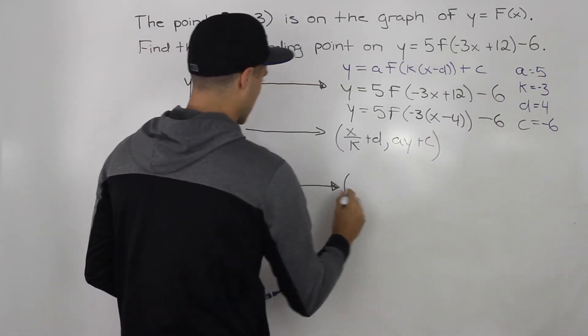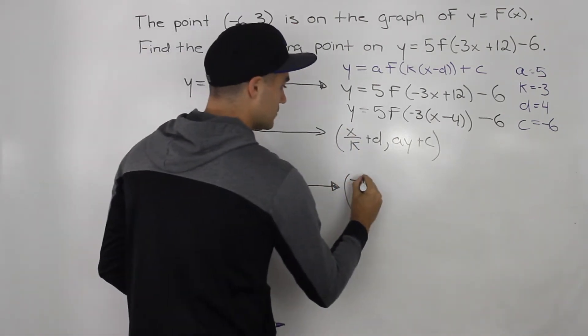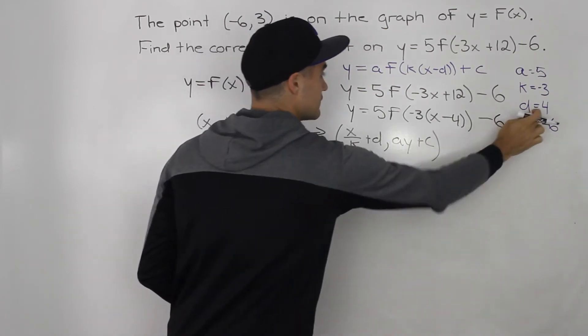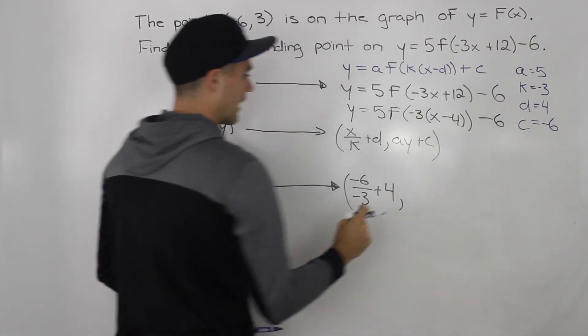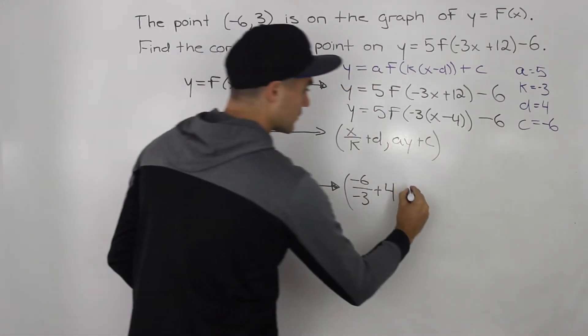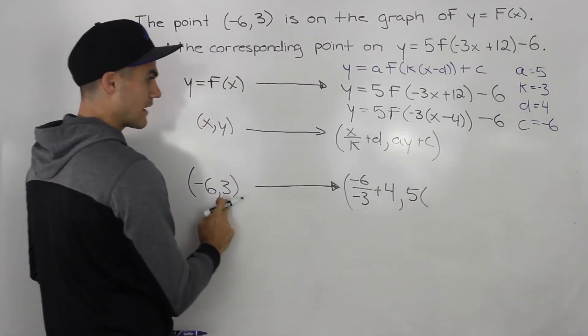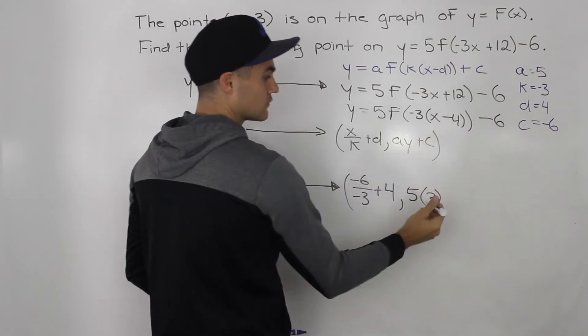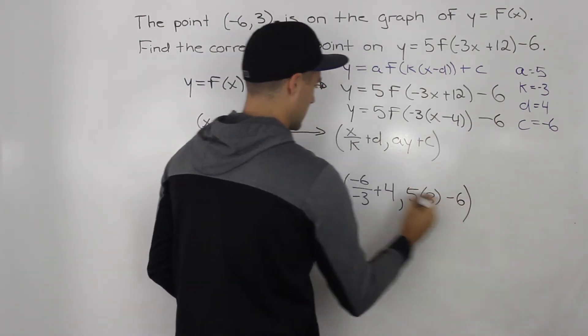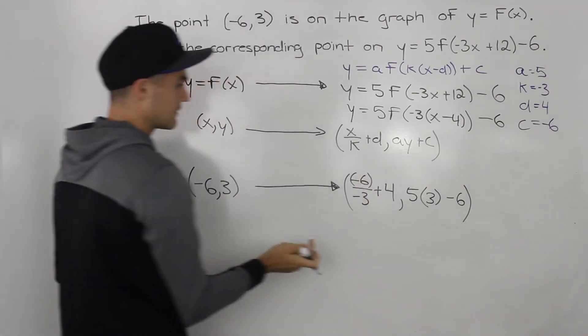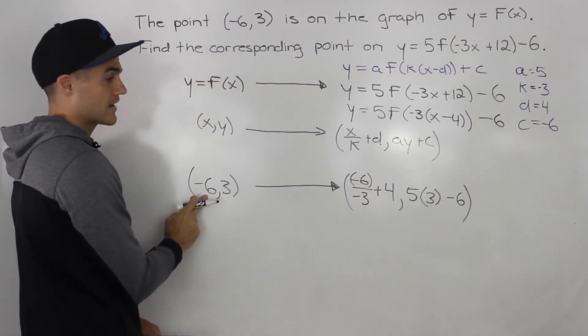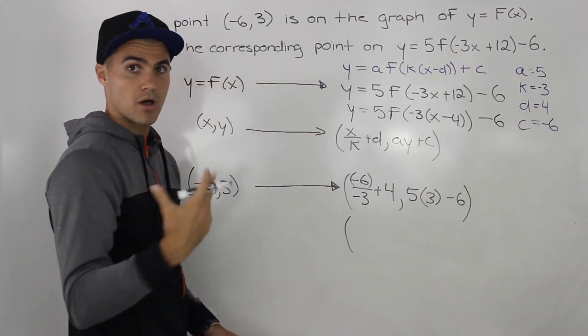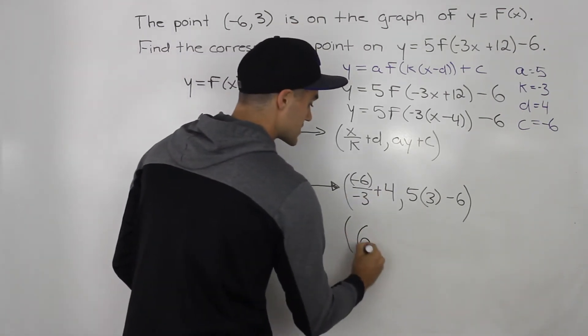So if we apply this formula on this point with these transformation values, what we're going to get is we're going to have -6, which is the x value divided by the k value of -3 plus the d value of 4. And then for the y coordinate, we're going to have the a value 5 times the y value of 3 plus the c value of -6. So it's just minus six here. And then let me put this -6 here in brackets. So this -6 in brackets is this initial x coordinate. So then when you simplify all this, -6 divided by -3 is positive 2, positive 2 plus 4 gives you 6.